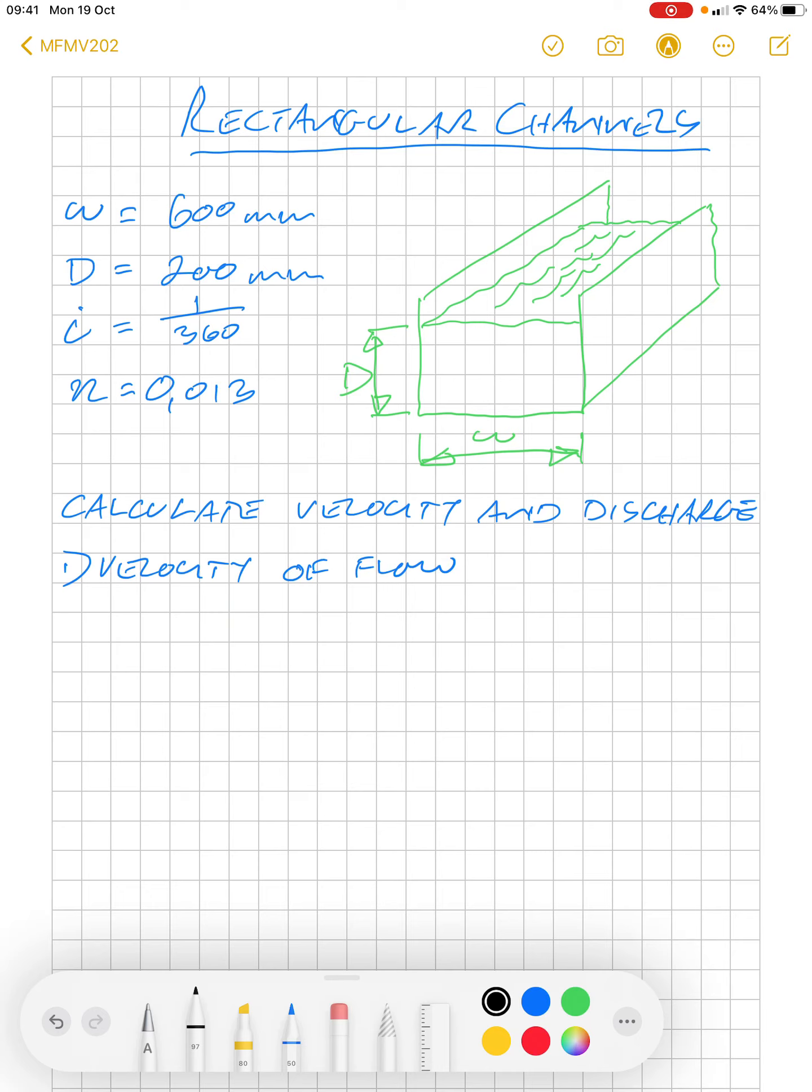Let's have a look at rectangular channels. In this example we have a rectangular channel shown in green with a width of 600 millimeters, a depth of 200 millimeters, and a slope of one in 360. We're also given a Manning constant n of 0.013, and we're asked to calculate velocity and discharge through the channel.